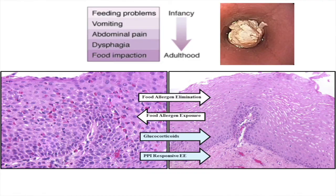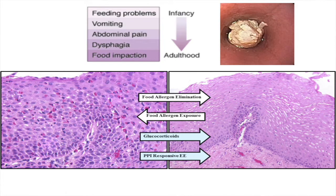My laboratory is focused on eosinophilic esophagitis, an emerging allergic inflammatory disease involving the accumulation and activation of eosinophils in the esophagus. The disease has a variety of symptoms, as shown in this slide. It varies with age, starting off with difficulties of growing, vomiting, abdominal pain, transitioning into difficulties swallowing, and eventually food impactions, which is shown in this slide.